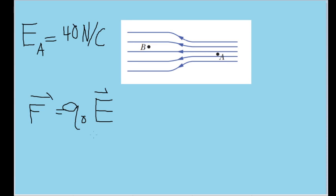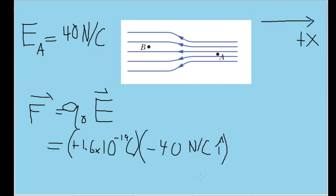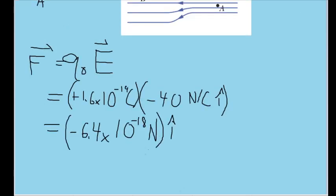Let's set the axis such that the positive x-axis stretches to the right of this image. Therefore, our formula is equal to the positive charge of the particle times the negative value of the electric field with the i-hat unit vector, since our electric field is clearly acting toward the negative x-axis. This gets us a value of negative 6.4 times 10 to the negative 18th newtons times the i-unit vector.